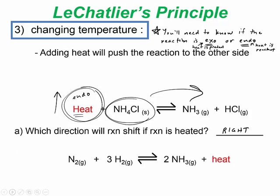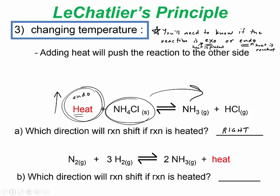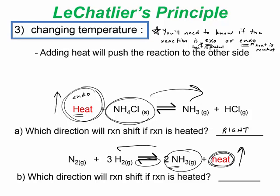Now looking at an exothermic reaction where heat appears on the product side: if we heat this reaction, the system has extra heat it doesn't like. In an attempt to remove it, the reaction consumes the heat and shifts left. So for an exothermic reaction, adding heat causes it to shift to the left.